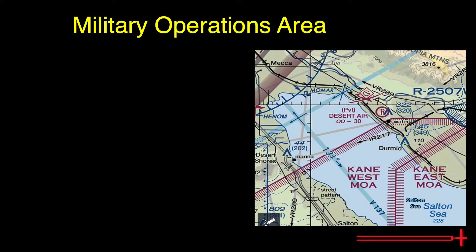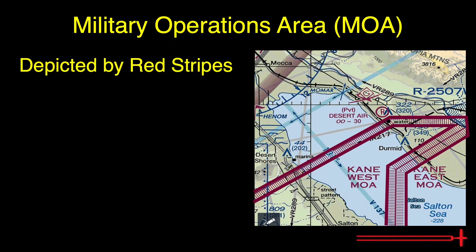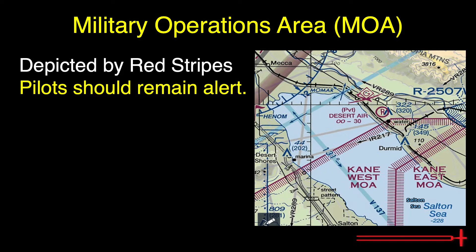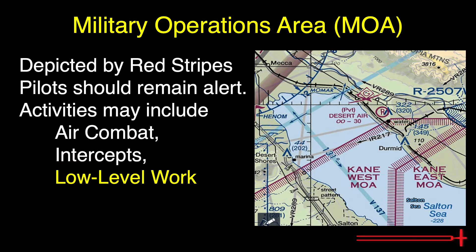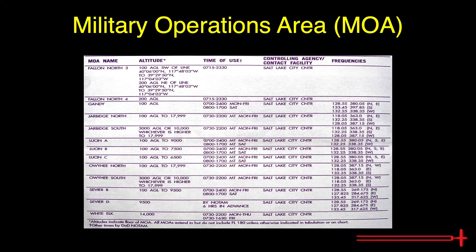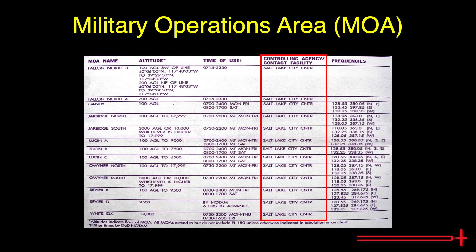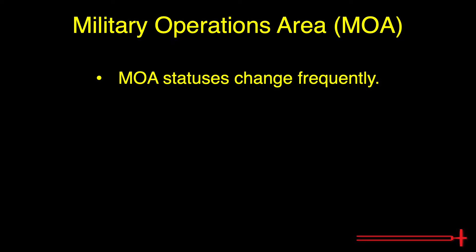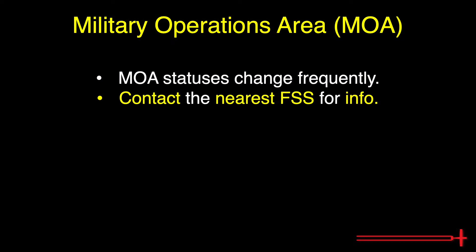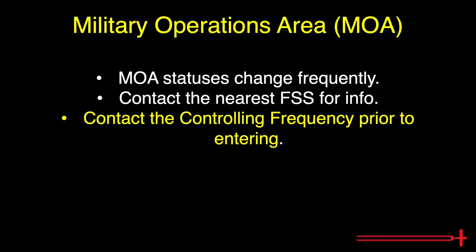Military Operations Areas, or MOAs, have their lateral limits depicted on VFR charts by a red striped pattern. Within this area, VFR pilots should remain extremely alert. Military pilots may be performing anything from air combat tactics, to intercepts, to low-level formation flying, all possibly in excess of 250 knots. Look at the chart tablature for additional information regarding MOAs. Here we have the name, vertical limits, time of use, controlling agency, and the frequencies on which to reach the controlling agency. The status of MOAs changes constantly. It is recommended that pilots contact the nearest flight service station for information regarding the status of the MOA, and to contact the MOA's controlling agency found on the tabs prior to entering the MOA.